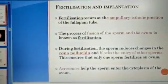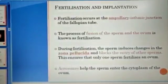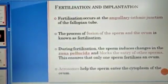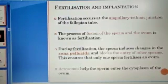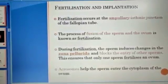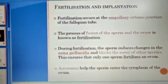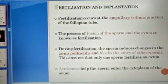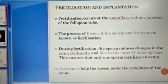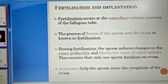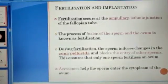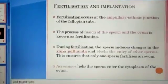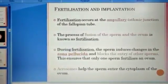Good afternoon. Now we are at the end of this unit. We started the unit on reproduction, the first unit of Biology Class 12, and today we are going to study the fertilization process and implantation. We already studied in previous videos the structure of the female reproductive system, male reproductive system, oogenesis, and spermatogenesis.